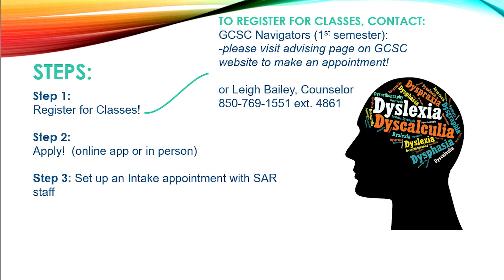We talked a little bit earlier about the need to self-identify. Here is how that process works. If you go to the GCSC website and search for Student Accessibility Resources, you will find our application where you can apply online, or come on campus and we can help you do the application in person. You must attach relevant documentation to your application for accommodations. However, before we can meet with you to talk about your accommodations, you will need to be registered for classes at GCSC. You can do this online or reach out to the SAR department for help.